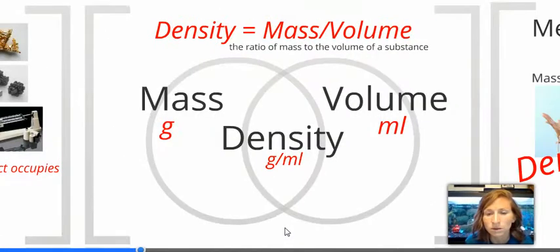Now, if we know those two things about an object, we can calculate its density by taking mass divided by volume. And that would give us the ratio of mass to the volume of a substance, otherwise known as density.